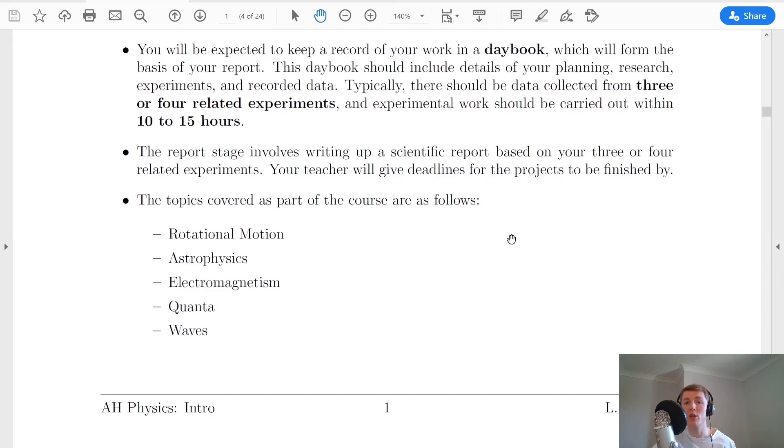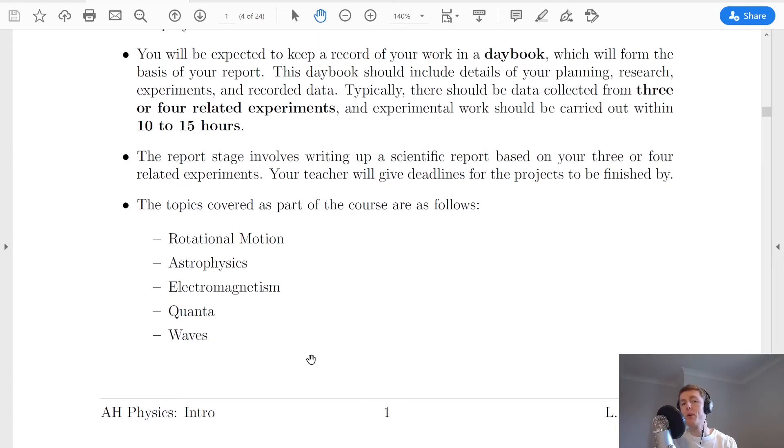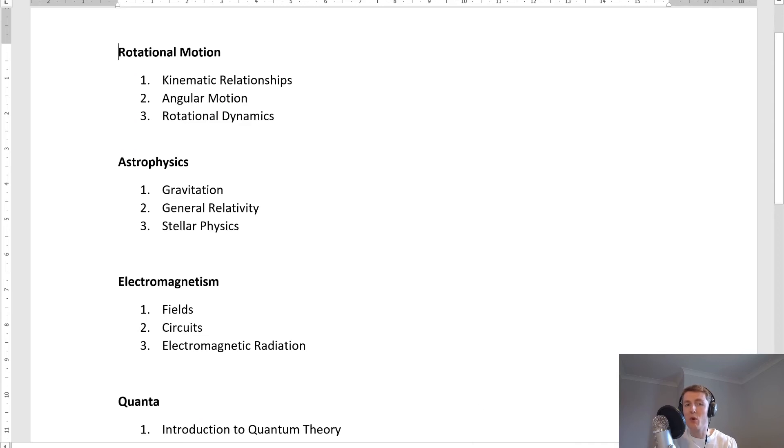The next thing to look at is the topics covered as part of the advanced higher course. And we've got five topics here. So you'll see there's rotational motion, astrophysics, electromagnetism, quanta and waves. Just to break those down into their smaller subtopics, we have rotational motion is made up of three parts called kinematic relationships, angular motion and rotational dynamics.